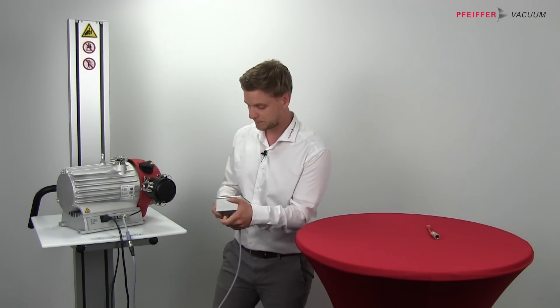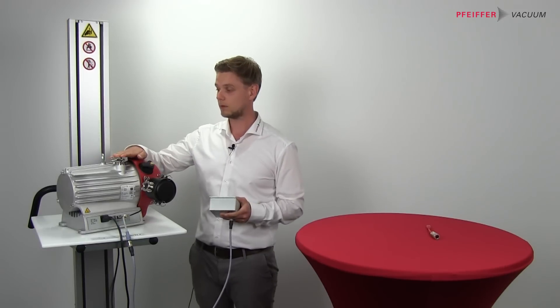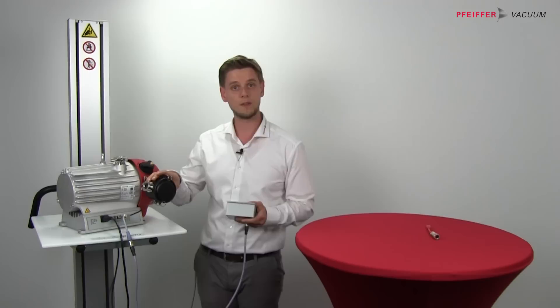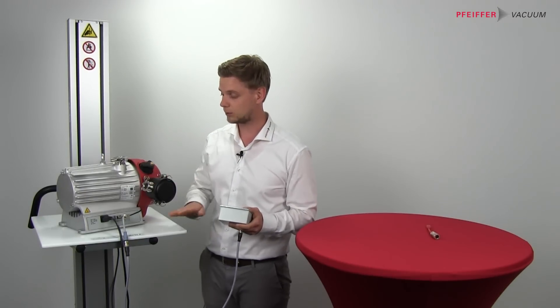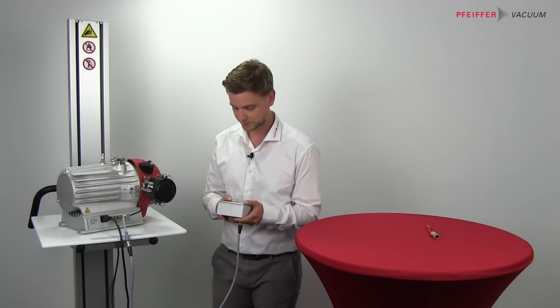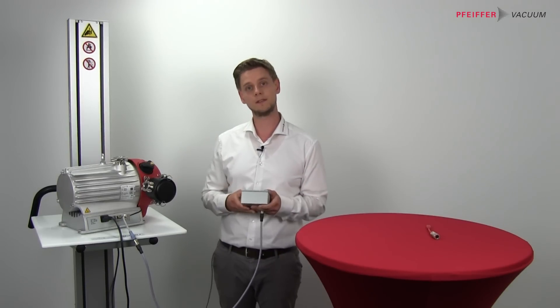So what have I shown you today? We have connected the blind flange at the pump. Also the filter for the dust of the tip seal. As well as the cabling to the DCU and the power plug. Now we are set up and can start the pump.